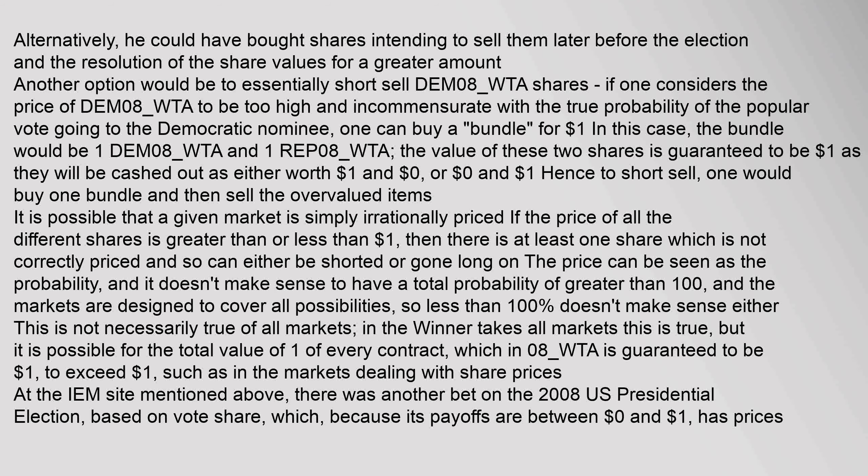It is possible that a given market is simply irrationally priced. If the price of all the different shares is greater than or less than $1, then there is at least one share which is not correctly priced and so can either be shorted or gone long on. The price can be seen as the probability, and it doesn't make sense to have a total probability of greater than 100%. Since the markets are designed to cover all possibilities, less than 100% doesn't make sense either. In the winner-takes-all markets this is true.